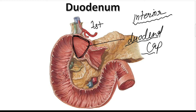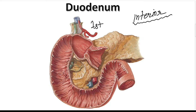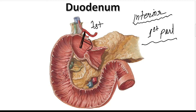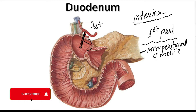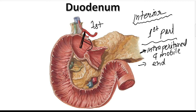Regarding the first part of the duodenum: number one, although the full duodenum is retroperitoneal and fixed, the initial part of the first part is intraperitoneal and freely mobile. Second, the initial 2.5 centimeters is supplied by end arteries.